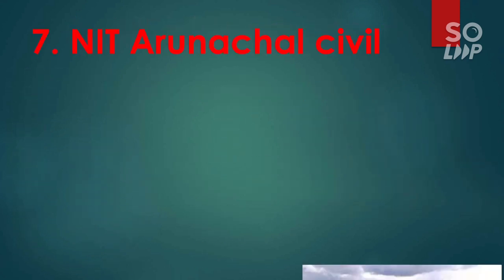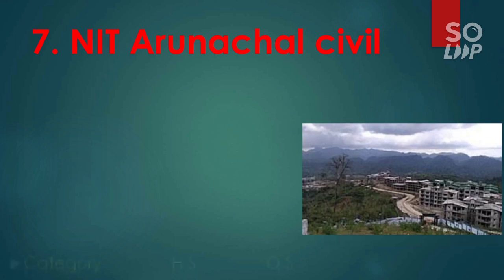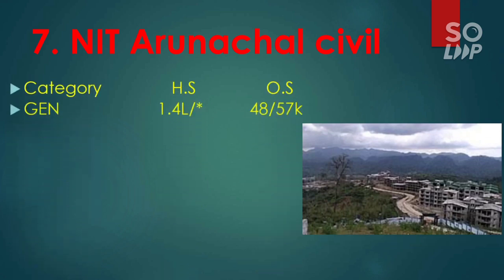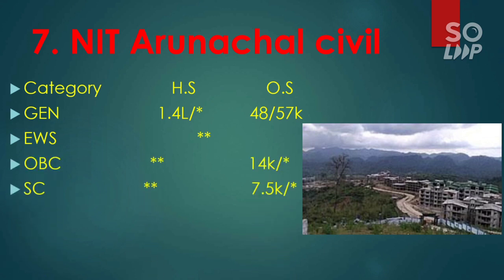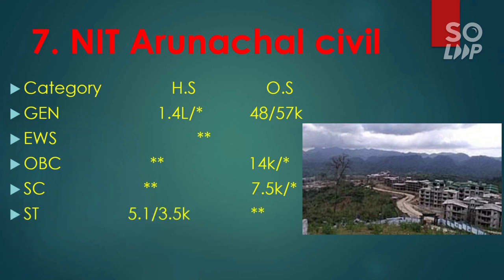The seventh is NIT Arunachal, where Civil Engineering has the lowest cutoff. For General other state, it is 48,000 and 57,000 for male and female. For EWS, there is no seat. For OBC, it is 14,000. For SC, it is 7,500. For ST other state, there is no seat.